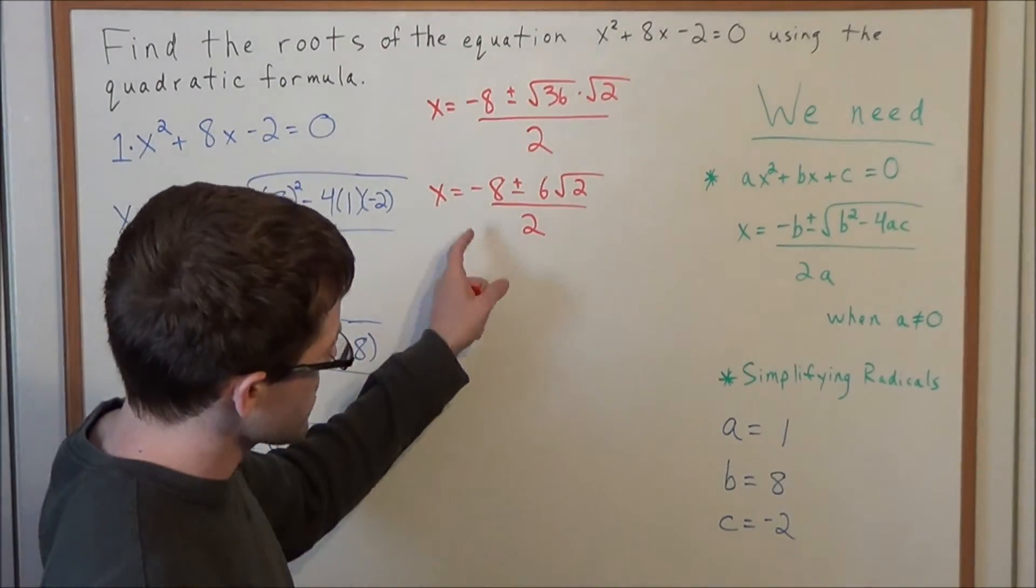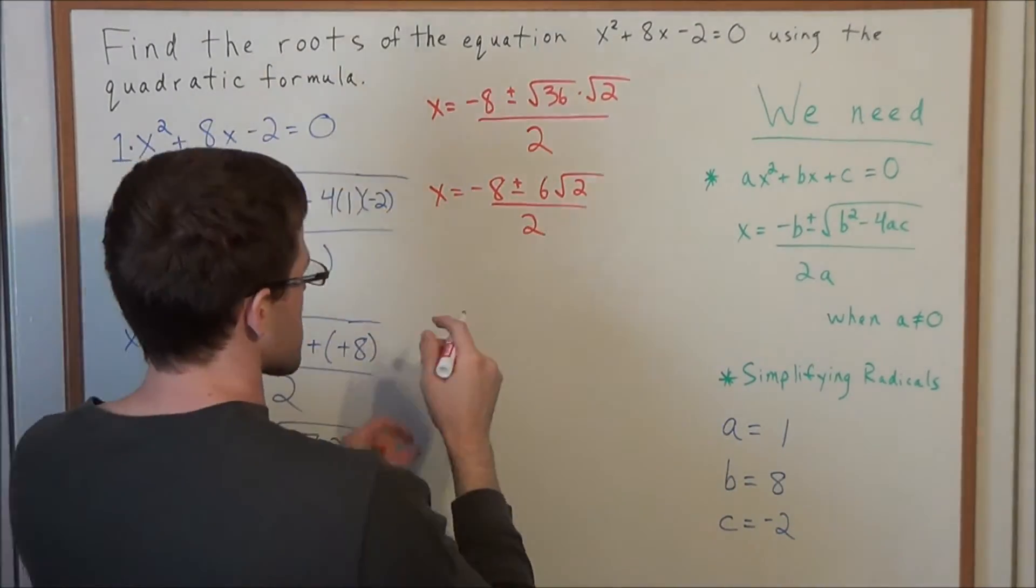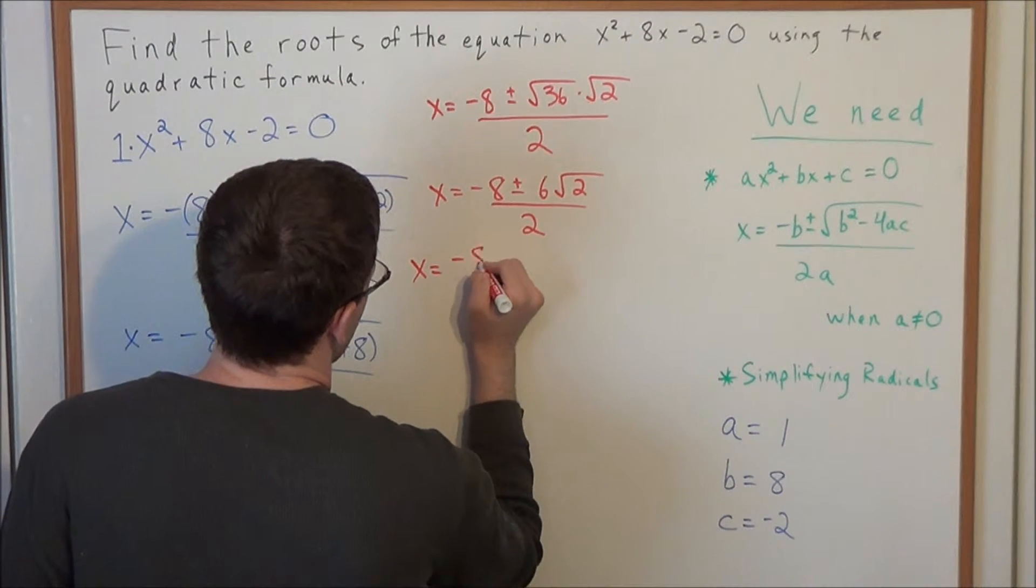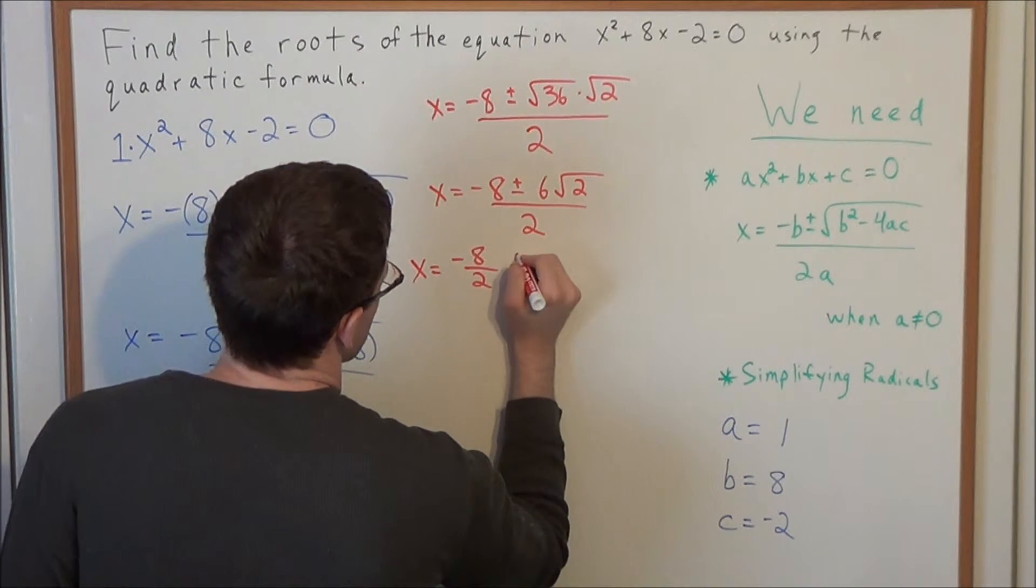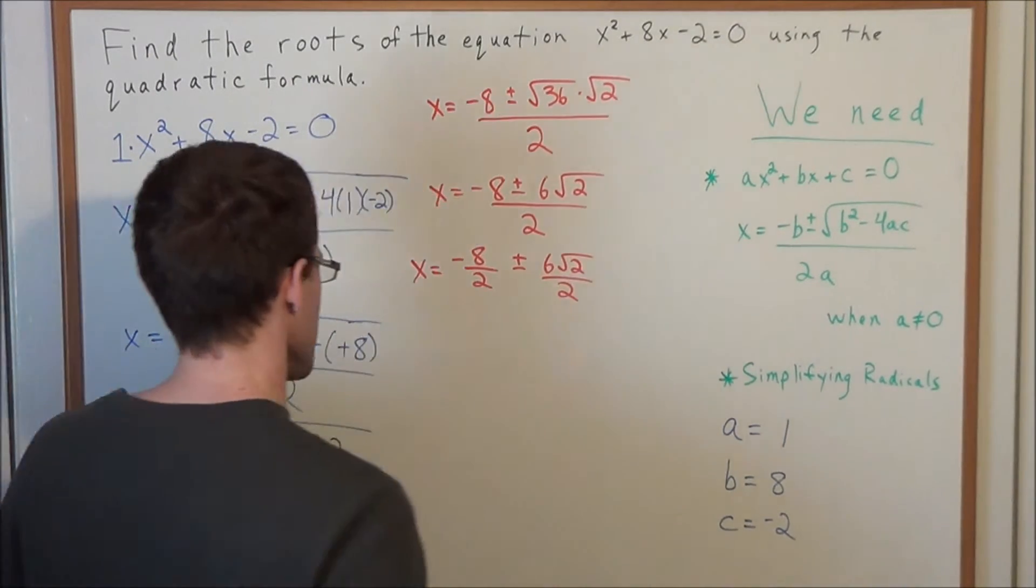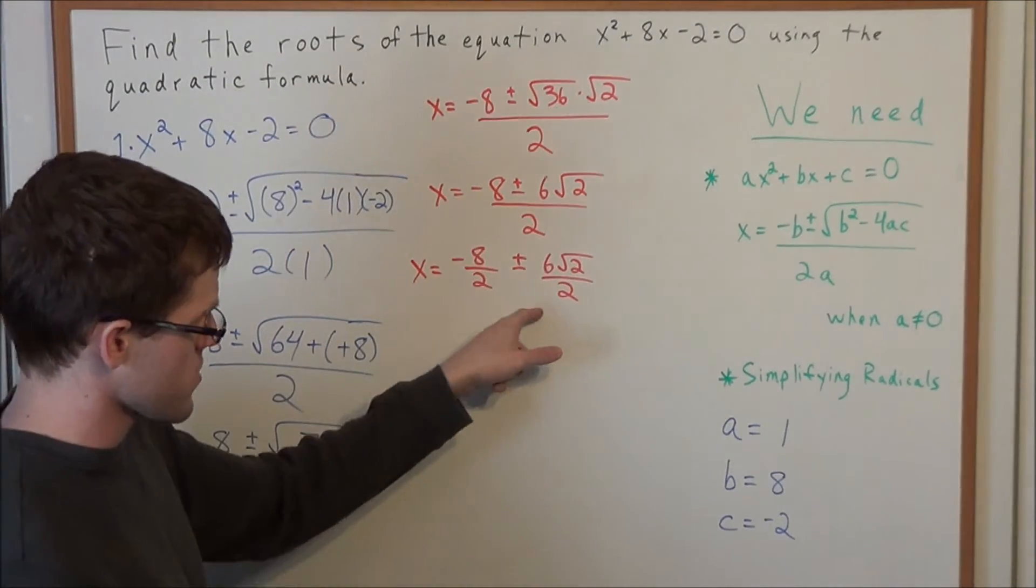And now for the next line, to simplify this, I want to break this into two fractions. So we're looking at -8/2 ± 6√2/2. We could break this apart into two fractions.